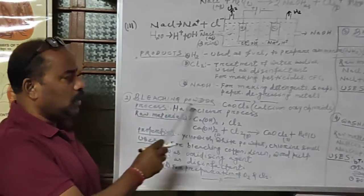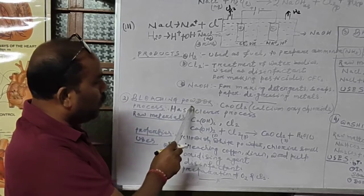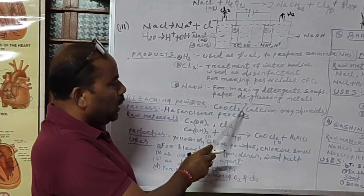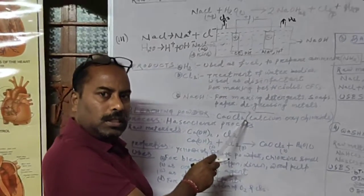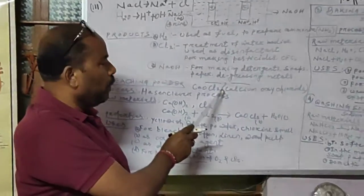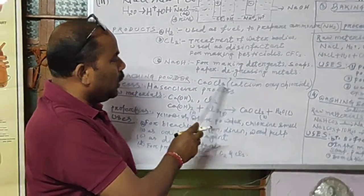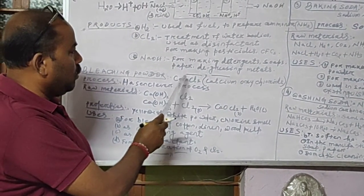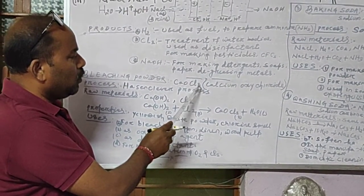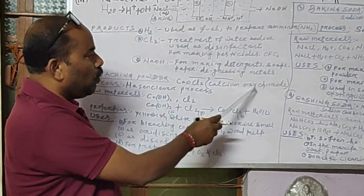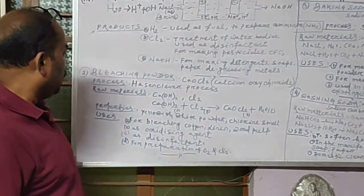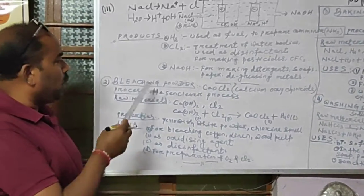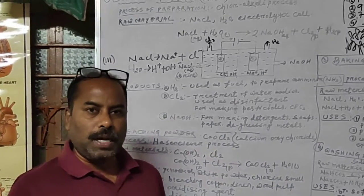Bleaching powder has the chemical formula CaOCl₂ and its chemical name is calcium oxychloride. Now let us see by what process bleaching powder is prepared in the industry.